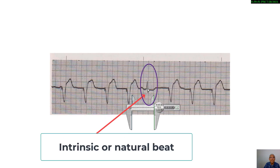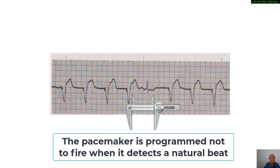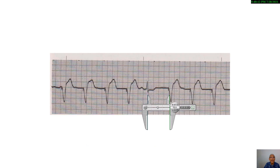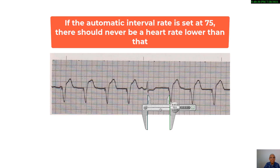There is also an intrinsic or natural beat present. The pacemaker will not fire because it respects the presence of that QRS complex. However, following the intrinsic beat, if there is no natural beat within the 75-beats-per-minute interval, the pacemaker initiates again. So the heart rate will never be less than 75 beats per minute. This is the automatic interval rate.